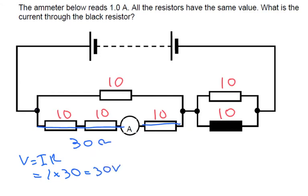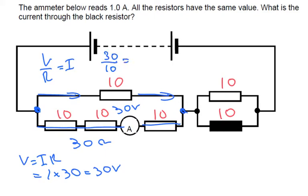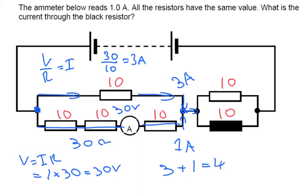So we know from here to here we've got a voltage of 30 volts. Using that, we can now work out what the current is in here. Using V divided by R equals I, we can have the voltage of 30 divided by 10 equals 3 amps. So we've got 3 amps going down here and 1 amp going here. So going in here by Kirchhoff's first law, 3 plus 1 equals 4 amps.